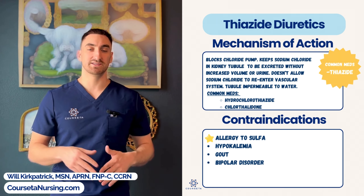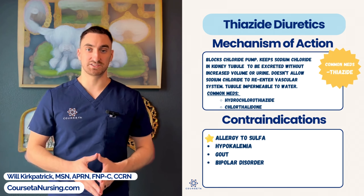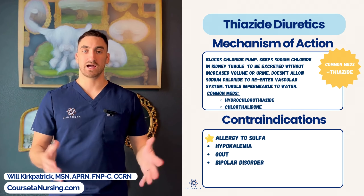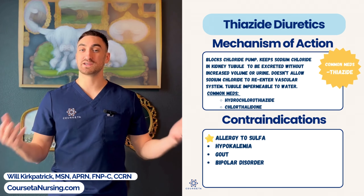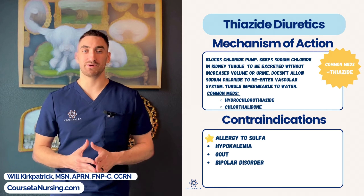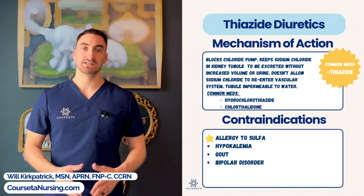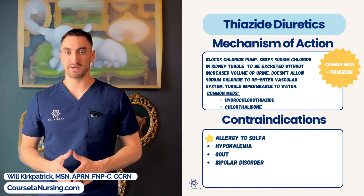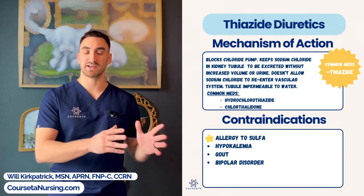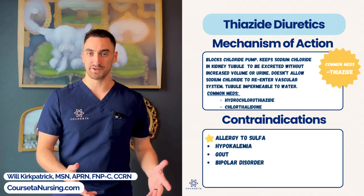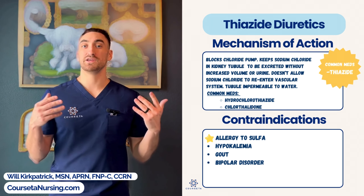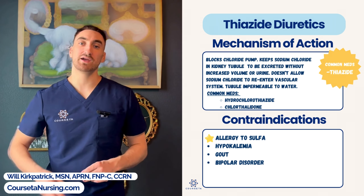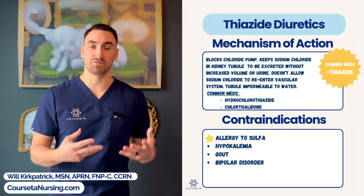The first diuretic, and actually one of the most preferred medications to lower blood pressure, is thiazide diuretics. The common suffix with this medication class ends with 'thiazide.' One of the most common medications is hydrochlorothiazide. There's also another medication that is thiazide-like, such as chlorthalidone. This diuretic is pretty unique because it selectively excretes sodium without increasing the actual excretion of water.